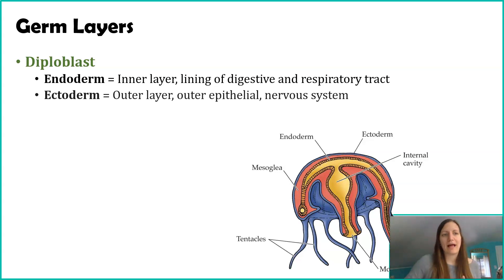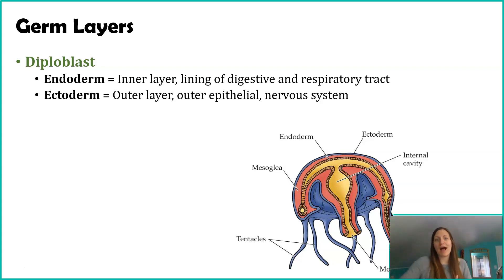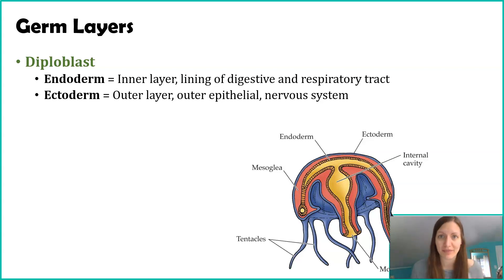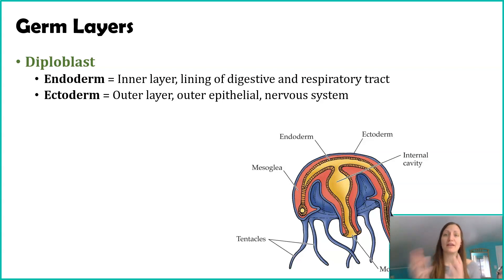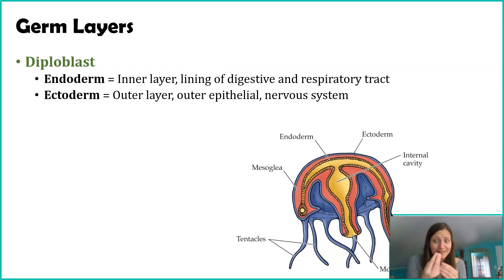The other germ layer that diploblasts have is the ectoderm. Ecto refers to the outer layer. Again, you're only a couple hundred cells, and that outermost germ layer eventually gives rise to the outer epithelial cells. It also gives rise to things like the nervous system, which is heavily entwined with those outer epithelial cells. So as a diploblast, those are the only two layers you have: endoderm on the inside and ectoderm on the outside. They are present as an embryo and give rise to those cells as you grow and mature.